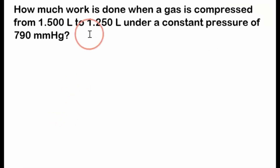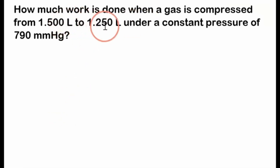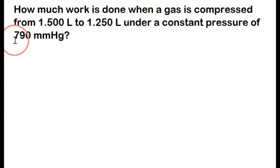How much work is done when a gas is compressed from 1.500 liters to 1.250 liters under a constant pressure of 790 mmHg?